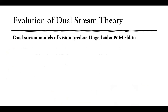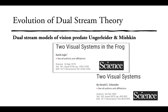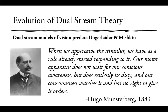Dual stream models for vision predate Ungerleider and Mishkin. In the 70s, David Ingle proposed two visual systems for the frog. Gerald Schneider also proposed two visual systems in the late 60s. Also in the late 60s, Trevarthen proposed two mechanisms of vision in primates.